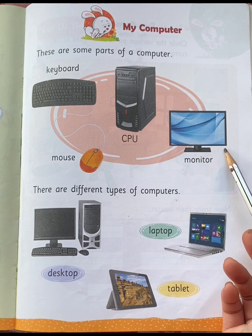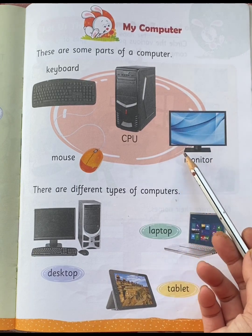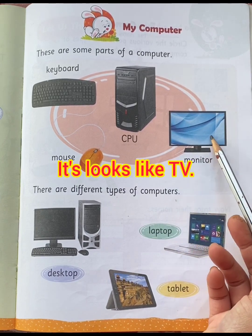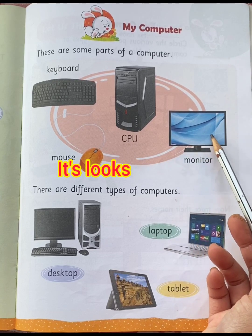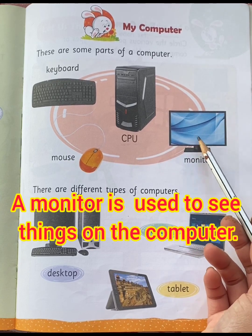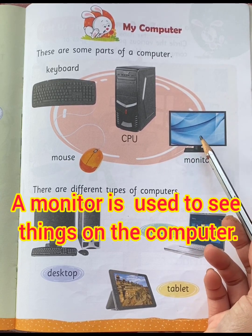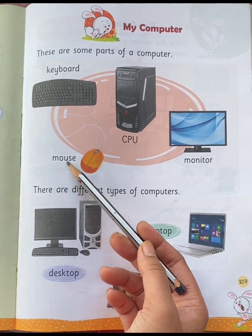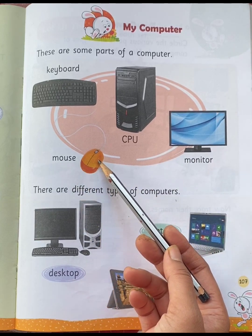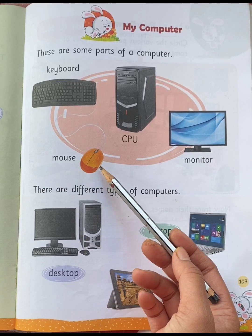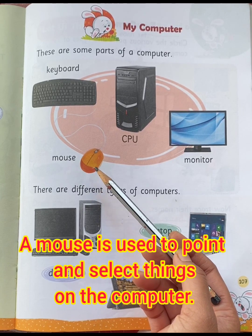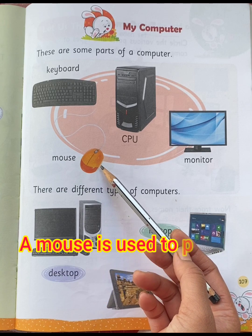Monitor. This is a monitor. It looks like a TV. A monitor is used to see things on the computer. This is a mouse. A mouse is used to point and select things on the computer.